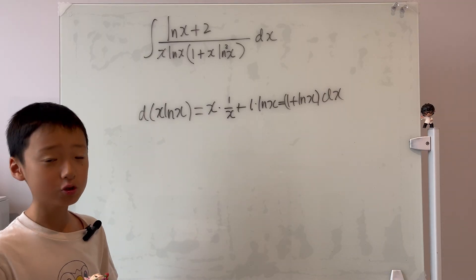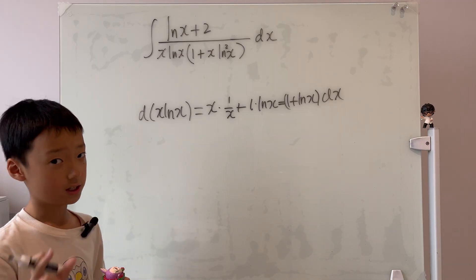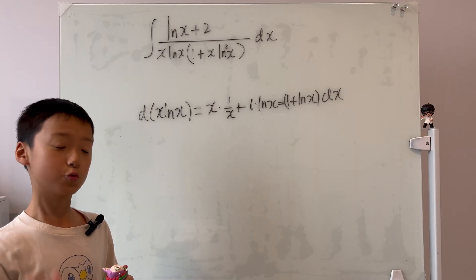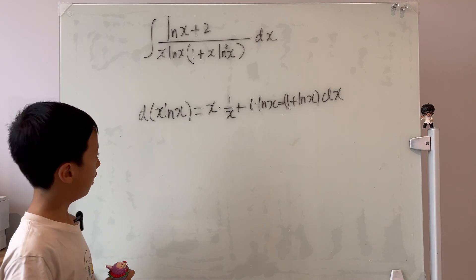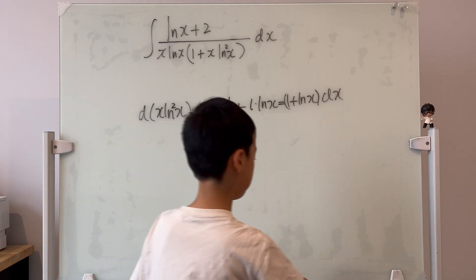And it's also bad because look at the denominator. We have x times ln x, that's fine. But in the brackets, we have x times ln x squared, which is bad. So why don't we try to take the differential of x times ln x squared, then? Wouldn't that be nicer?